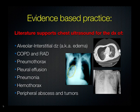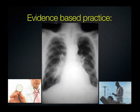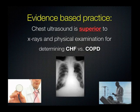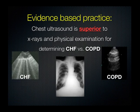Looking at the evidence, there is a great deal of evidence supporting the use of chest ultrasound for the diagnosis of many conditions including pneumothorax, pneumonia, and ARDS. For example, chest ultrasound has been shown to be superior to x-rays and physical examination for differentiating CHF from COPD. This is often a problem with patients who come in short of breath with a history of both. We can scan the chest and see — a predominance of A lines is more likely a COPD exacerbation, while a predominance of B lines bilaterally indicates pulmonary edema.